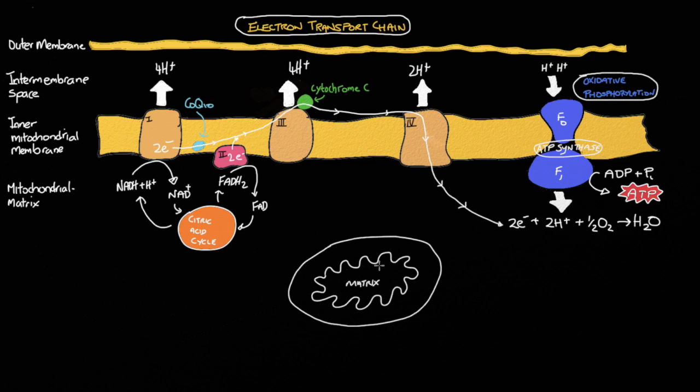Then we have this convoluted area, and this convoluted area represents this section, the inner mitochondrial membrane. So this section here represents the inner mitochondrial membrane.